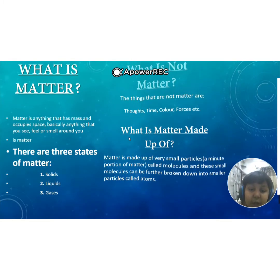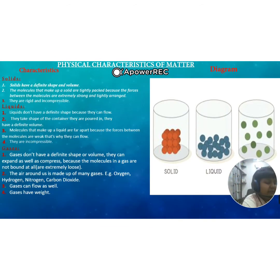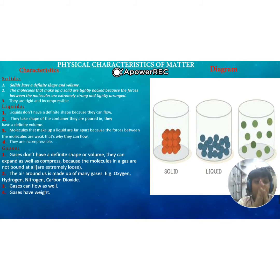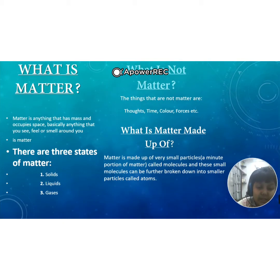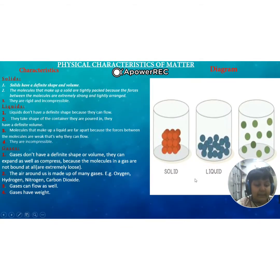So what is matter made up of? Matter is made up of very small particles called molecules. And these molecules can be further broken down into smaller particles called atoms.